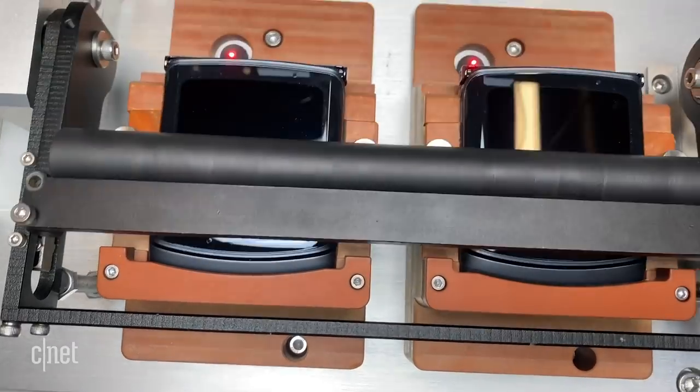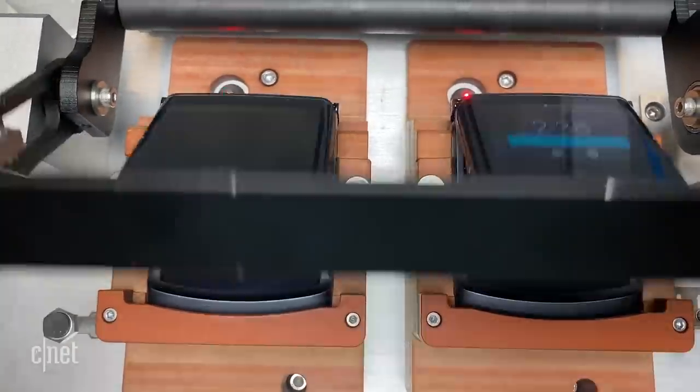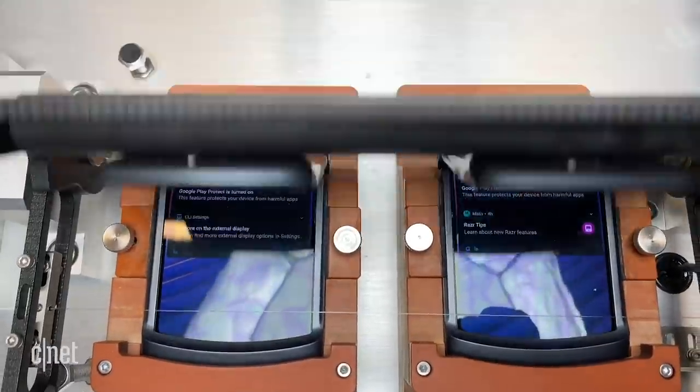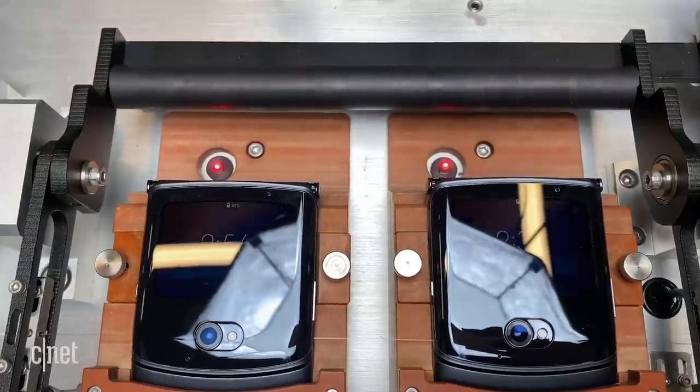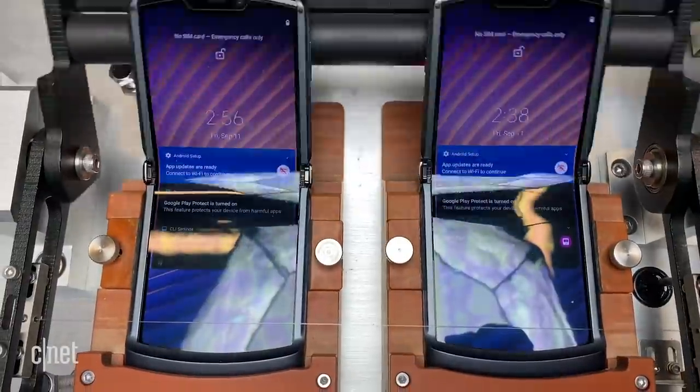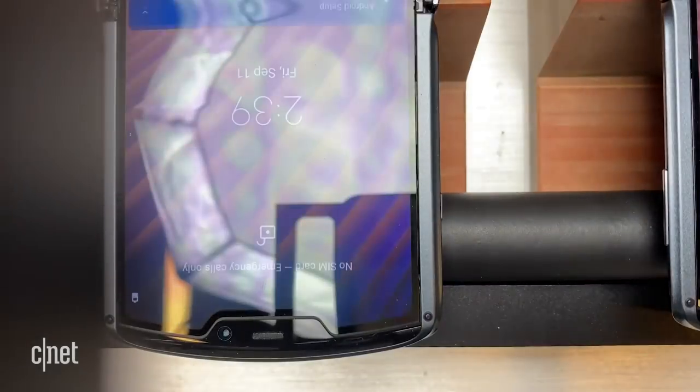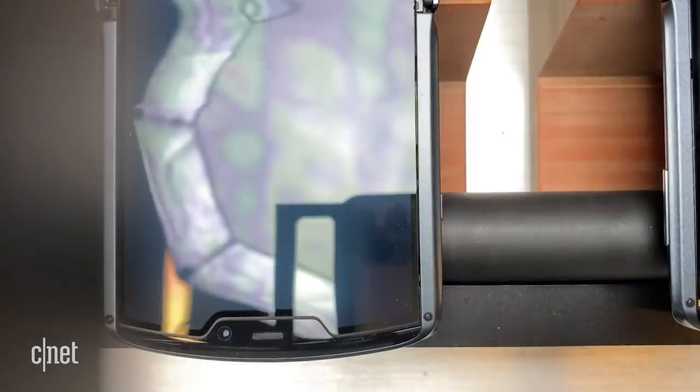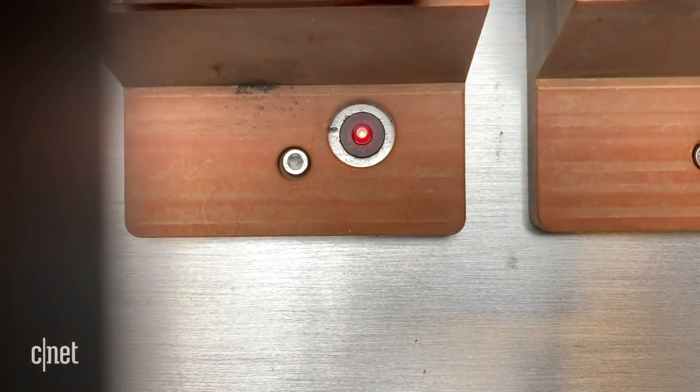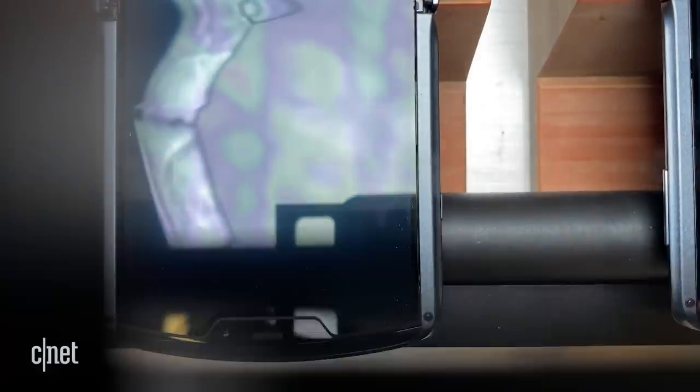Now to recreate hundreds of thousands of folds in less time than five years, the machine fully opens and closes the phones once every four seconds. There's actually something calming about hearing phones shut and closed every four seconds. Take a listen. At that rate, it takes Motorola 10 days to fold each phone 200,000 times.